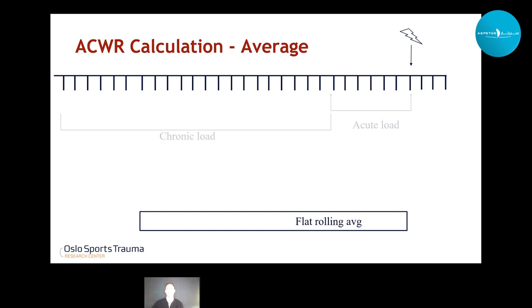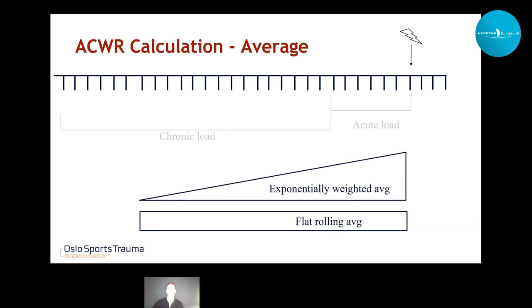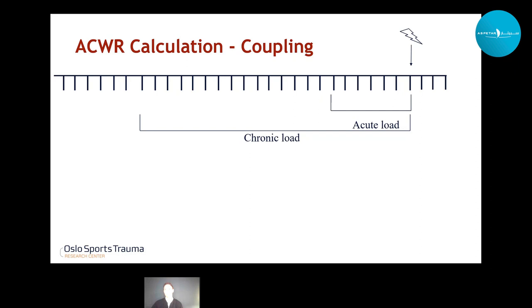To complicate things further, you can use a flat rolling average — which we know from everyday calculus — or what's been rather popular lately, the exponentially weighted moving average, which weights more recent values more heavily. Last but not least, there is something called coupling: in the original concept, the acute week is part of both the acute load but also 25% of the chronic load if you use a 28-day chronic period. This leads to problems such as a spurious correlation between the two. Research from Lolli et al. at Aspetar suggests this is a large problem.